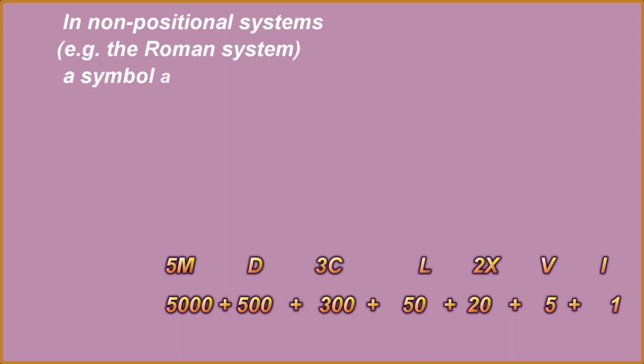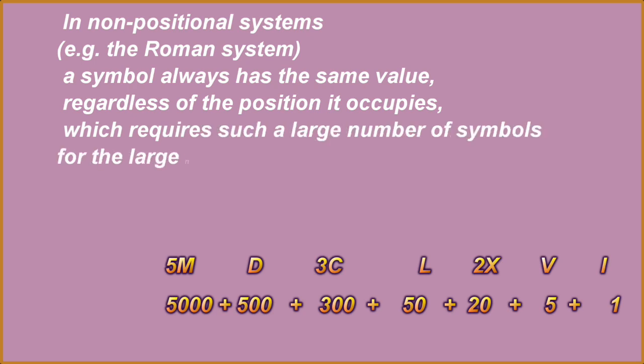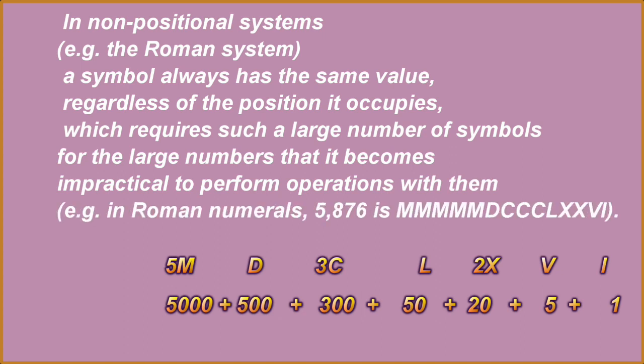In non-positional systems, for example, the Roman system, the symbol always has the same value, regardless of the position it occupies, which requires such a large number of symbols, for the large numbers, that it becomes impractical to perform operations with them. For example, in Roman numerals, 5876 is MMMMMMMDCCCLXXVI. So you have seen how difficult it has been.